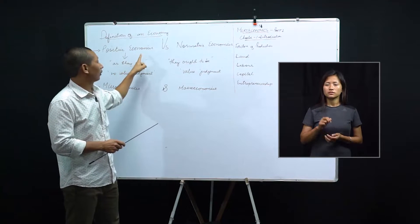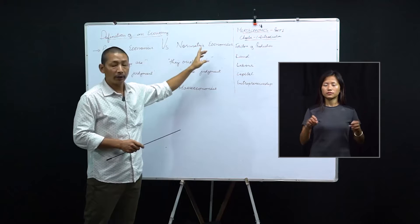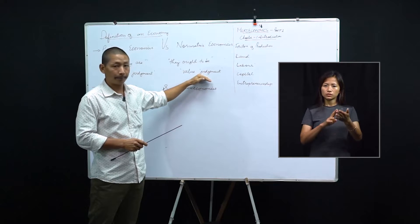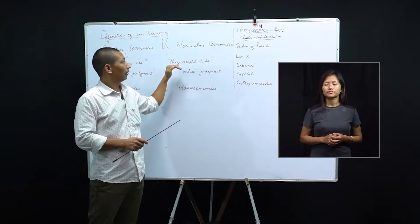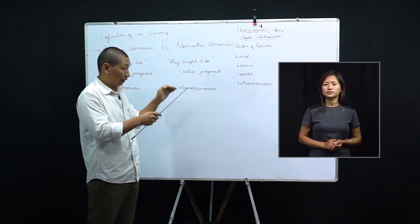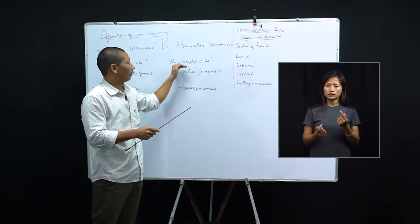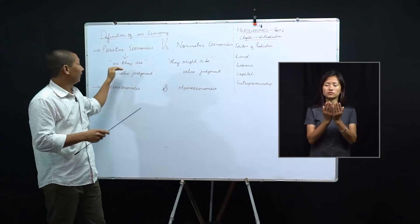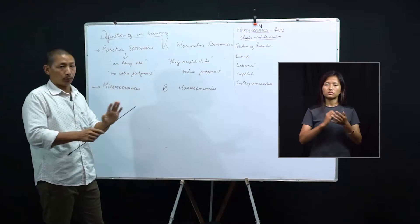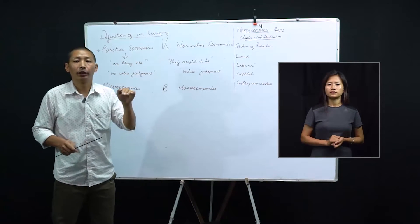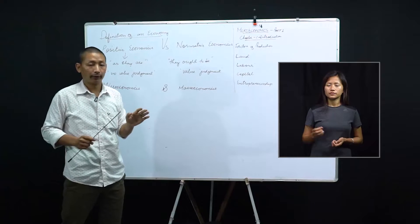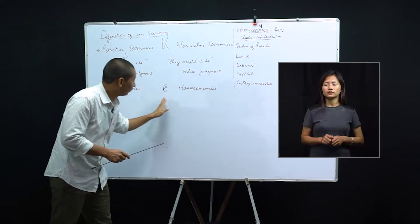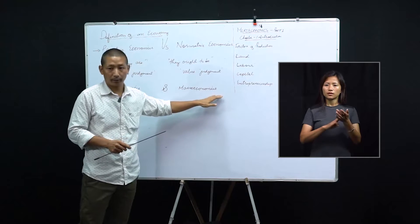That's the difference between positive economics and normative economics. Value judgment is made in normative economics, and it observes the economic situation as they ought to be. In positive economics, they study the economy as they are — no value judgment is made and they remain neutral.